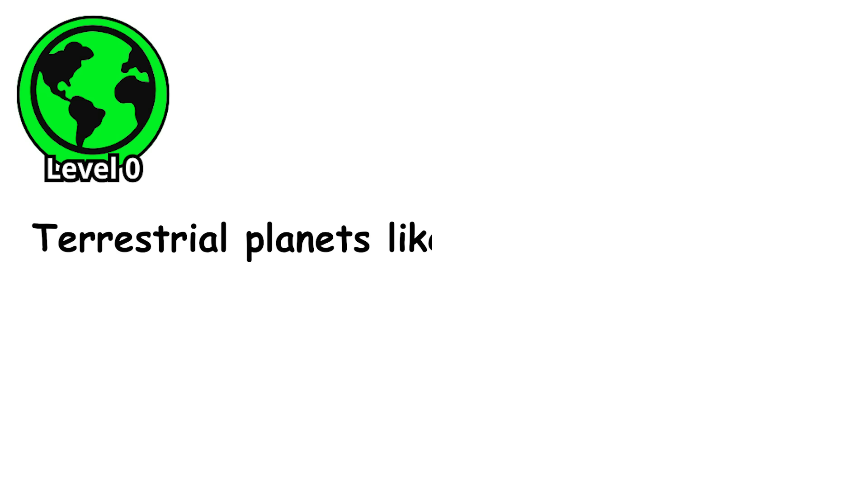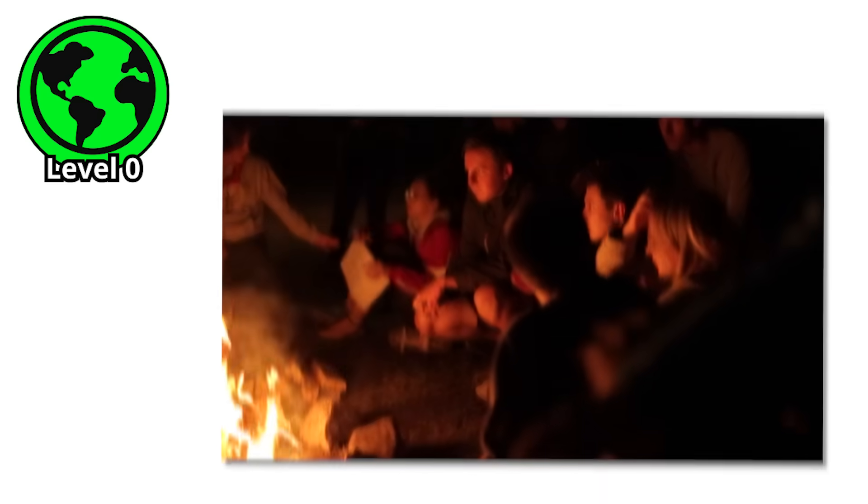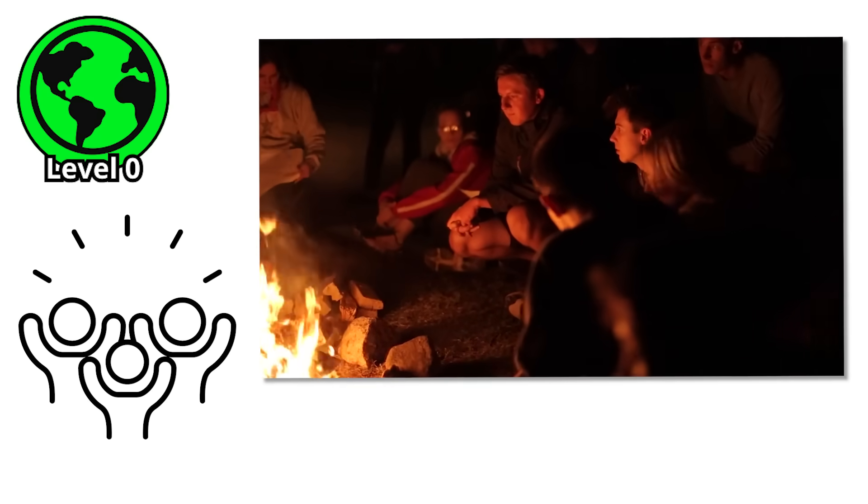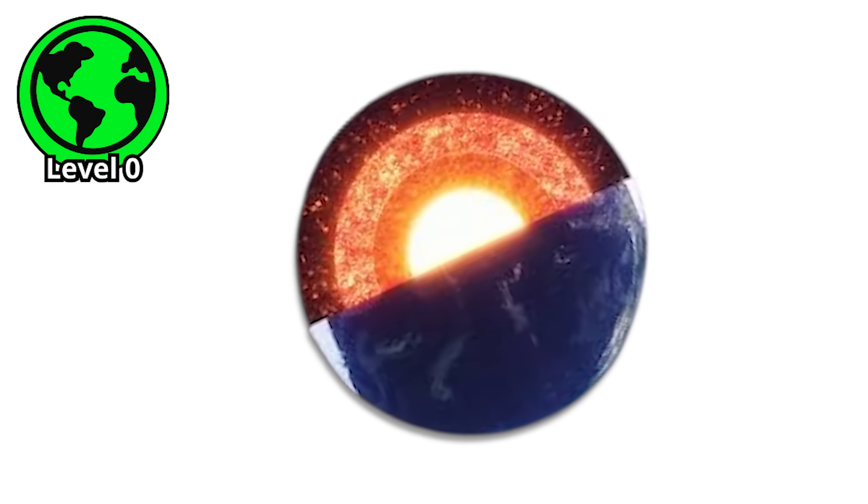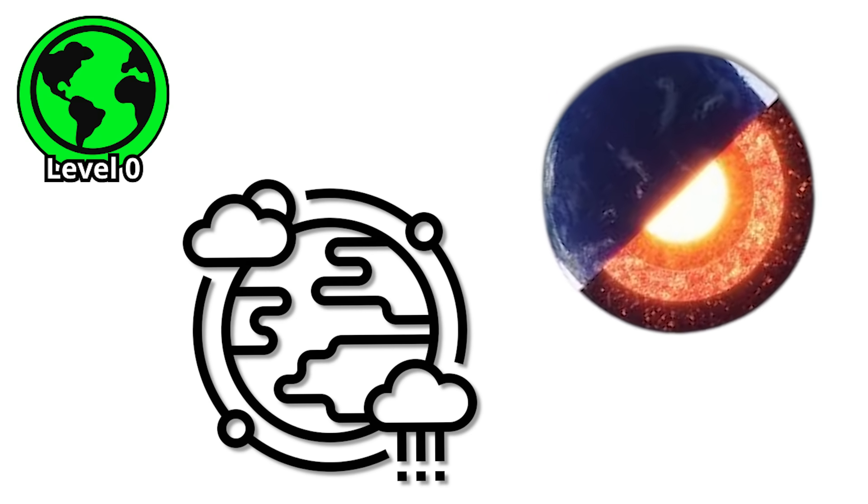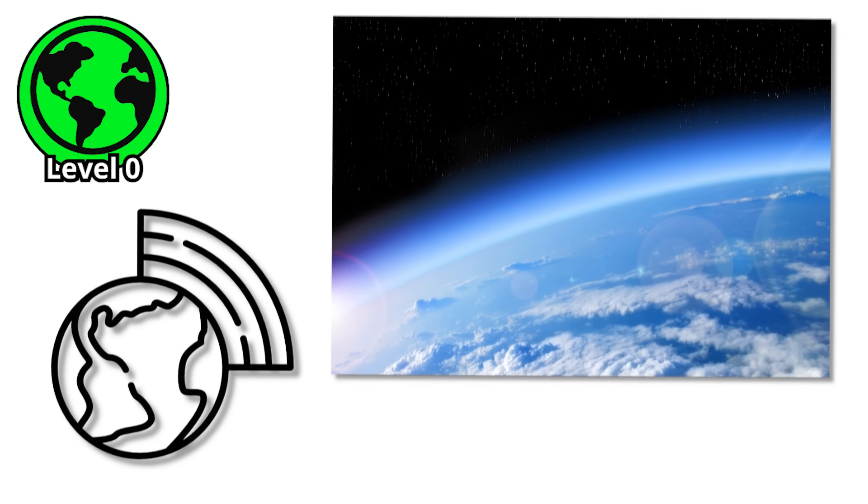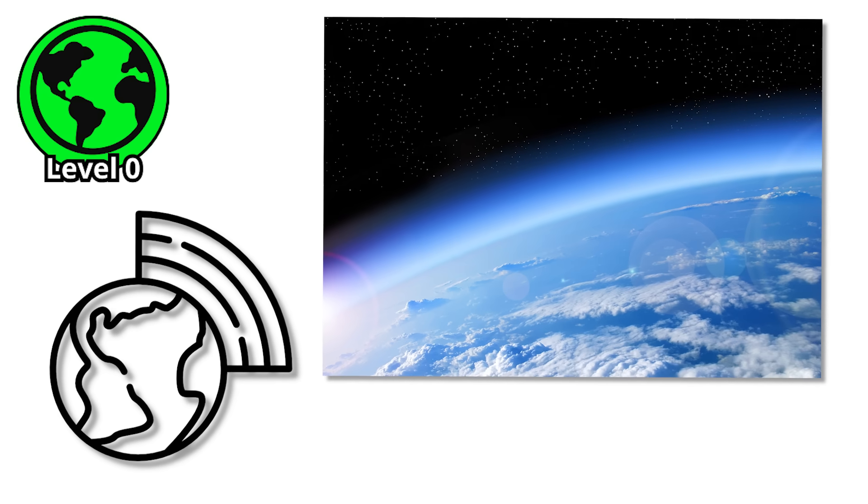Terrestrial planets like Earth, Mars, Venus, and Mercury are rocky, dense, and relatively tiny. They're the runts of the planetary litter, huddled close to the sun like kids around a campfire. Metal cores wrapped in layers of rock, maybe topped with a thin atmospheric frosting if they're lucky. Earth got the golden ticket - liquid water, a magnetic field that actually works, and an atmosphere that doesn't actively try to kill you.